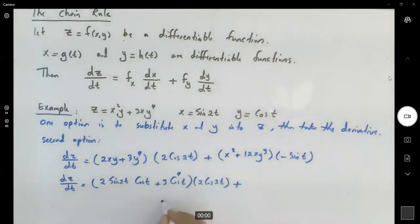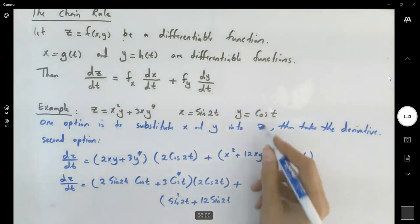Plus, now x², x is sin(2t), so sin²(2t), plus 12sin(2t) times y³, cos³(t), times negative sin(t).